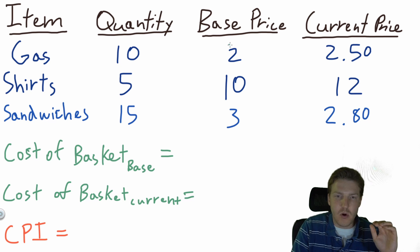Let's say at a base price, so one year ago a gallon of gasoline used to cost $2. Now that same gallon of gasoline costs $2.50 today. The shirt used to cost $10, now today it costs $12. The sandwich used to cost $3, now today it costs $2.80.